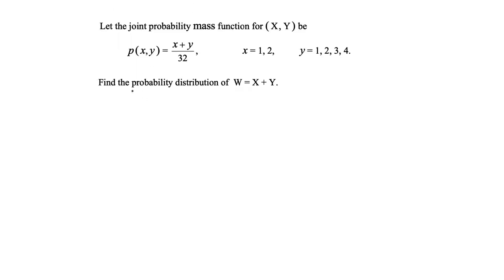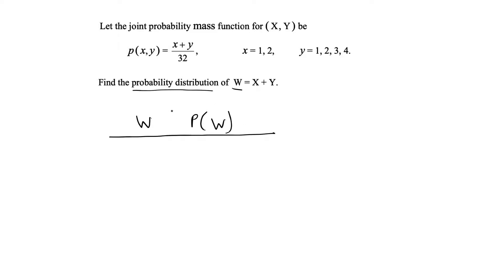To find the probability distribution of a discrete random variable such as w, we're going to list out each possible value of w in a table together with the corresponding probability that w takes on that value. The table will have w on the left-hand side and on the right-hand side we'll find the probability of w at each possible value.